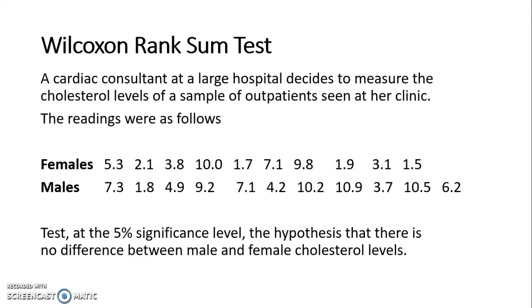Notice with this example that we're being asked to compare two sets of data that is unpaired. That is my first clue that this is a Wilcoxon Rank Sum test. The data is not paired so I can't do a paired sign or paired Wilcoxon. The other big clue is that my two data sets are different sizes. Females have 10 pieces of data and males have 11 pieces of data, so that's the other big warning sign that this is a Wilcoxon Rank Sum test.